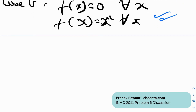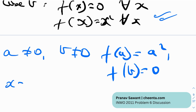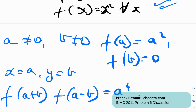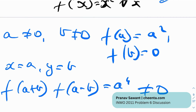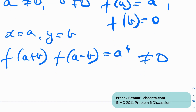To avoid the pointwise trap, take some a ≠ 0 and b ≠ 0 such that f(a) = a² and f(b) = 0. Plug in x = a and y = b into the functional equation. We get f(a+b)·f(a−b) = a⁴, which is not equal to 0, since a ≠ 0. Therefore f(a+b) ≠ 0 and f(a−b) ≠ 0.